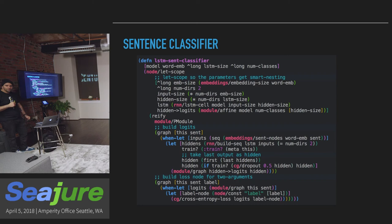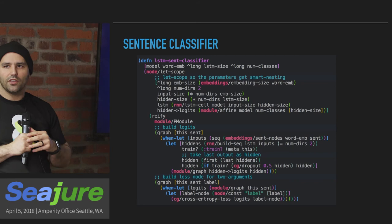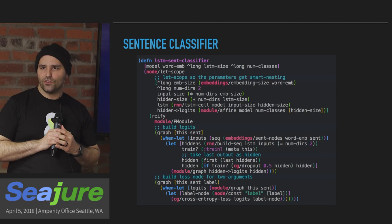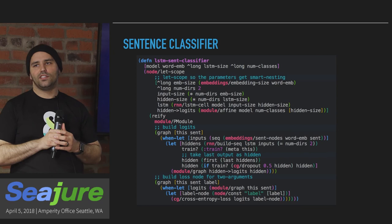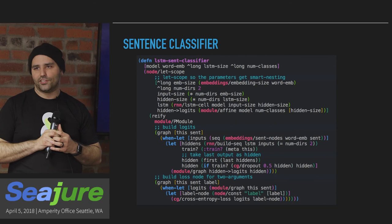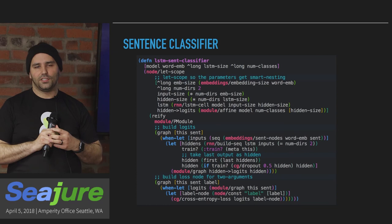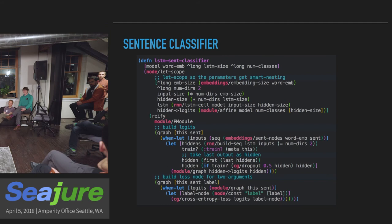Neanderthal has a lot of linear algebra — Cholesky decompositions, basically a version of almost everything in BLAS — but it doesn't do neural nets. It has matrix multiplications and various things, but it's not doing computational graph stuff.